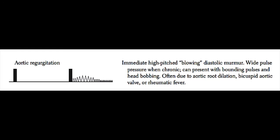The next murmur we'll discuss is aortic regurgitation. Aortic regurgitation or insufficiency causes an immediate early diastolic high-pitched blowing murmur. This murmur is caused by a very high pressure in the aorta going back into the left ventricle across an insufficient aortic valve. Patients with aortic regurgitation will therefore have a very wide pulse pressure, because the blood that should be in the aorta during diastole is going back into the left ventricle. The systolic pressure in the aorta will be much higher than the diastolic pressure, because all of the blood in the aorta is going back into the heart.